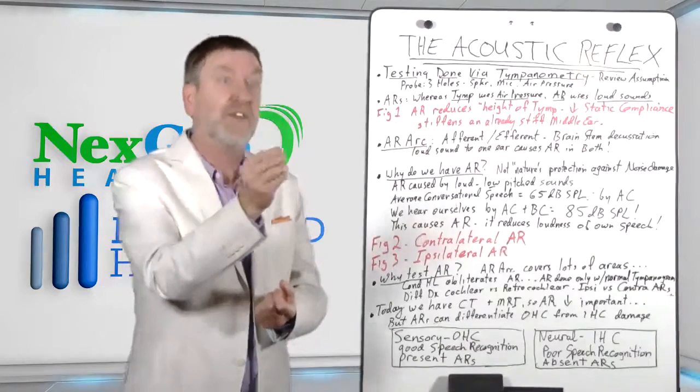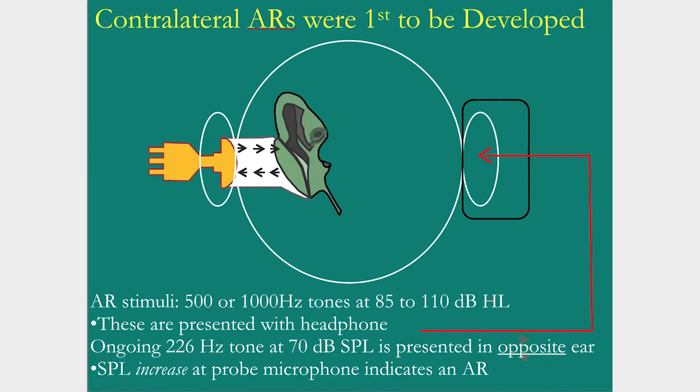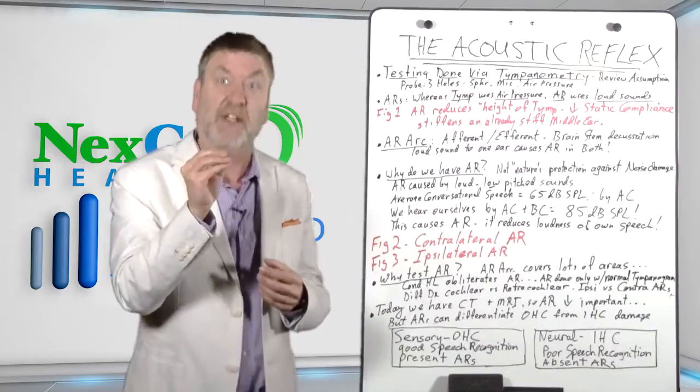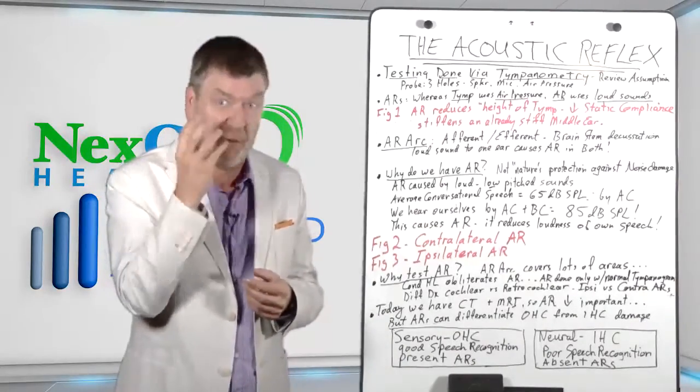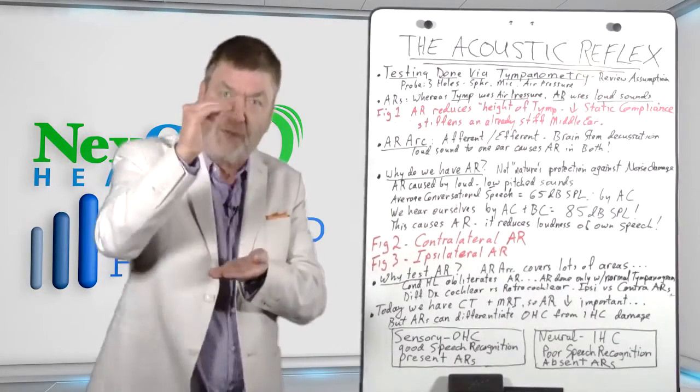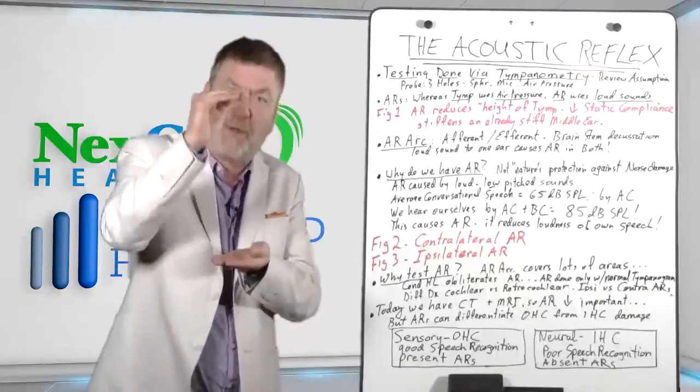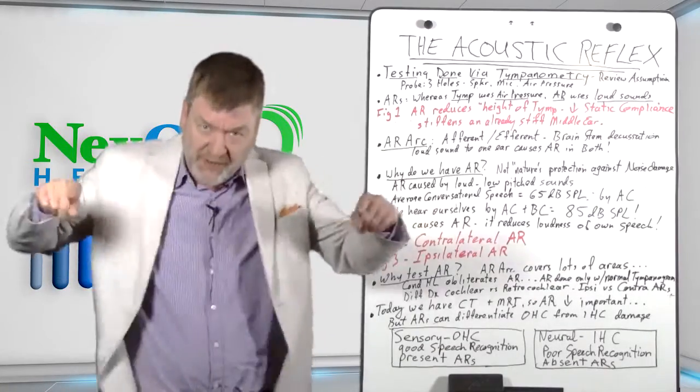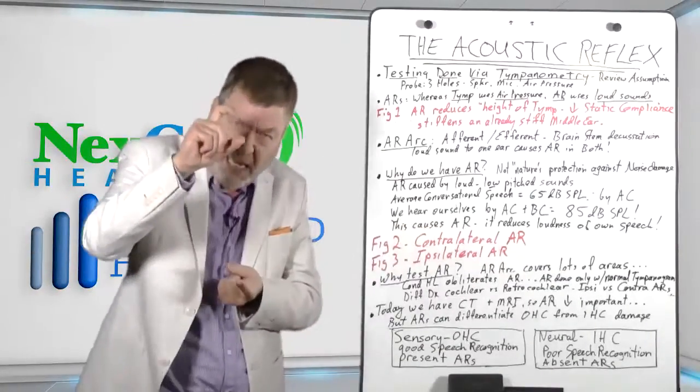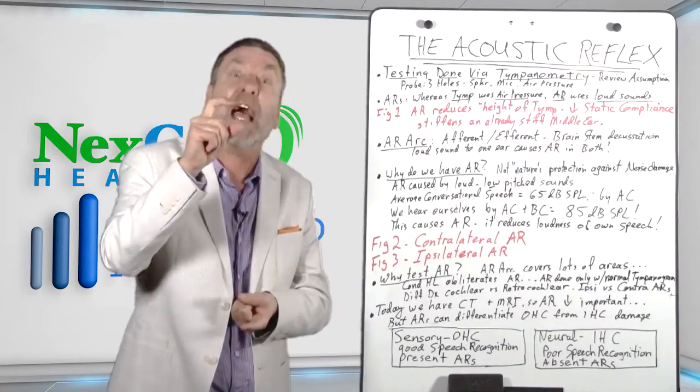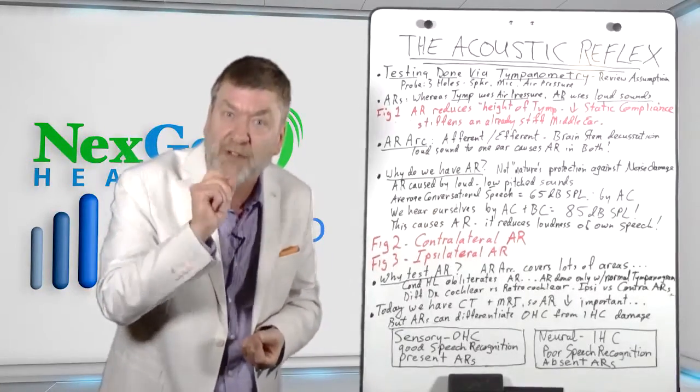Therefore reducing the efficiency temporarily of the sound transmission through that conductive middle ear system. When that happens, there's a change in the amount of sound bouncing back off of the probe tone. So a loud sound here alters the amount of sound bouncing off the eardrum. Actually, it increases the amount of sound bouncing off the eardrum, therefore reducing the efficiency of this middle ear for a split second. And that reduction in tympanogram size, that reduction in static compliance in the height of the tympanogram, that is what is measured as the acoustic reflex.